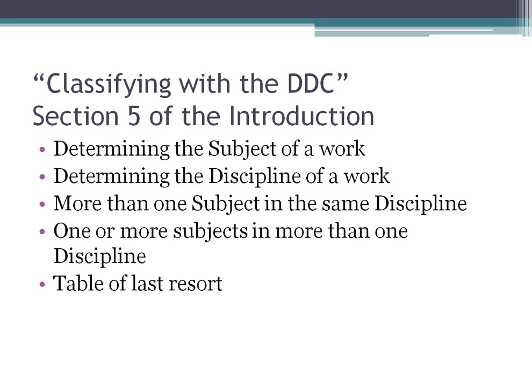I specifically want to talk about Section 5 of the introduction, called 'Classifying with the DDC.' This is the framework we're going to work with for the rest of the session and some of the next. It covers: determining the subject of a work, determining the discipline of a work, what to do when you have more than one subject in the same discipline, what to do when you have subjects in more than one discipline, and the table of last resort. We'll get to the first three today, and the others will wait until next week.